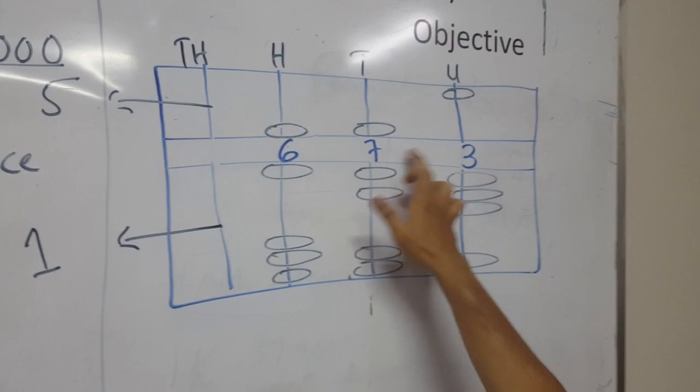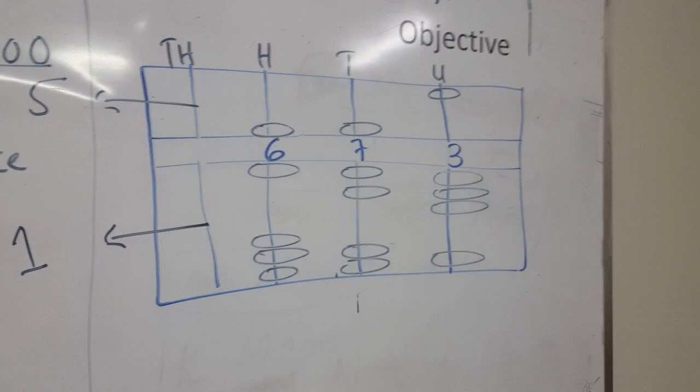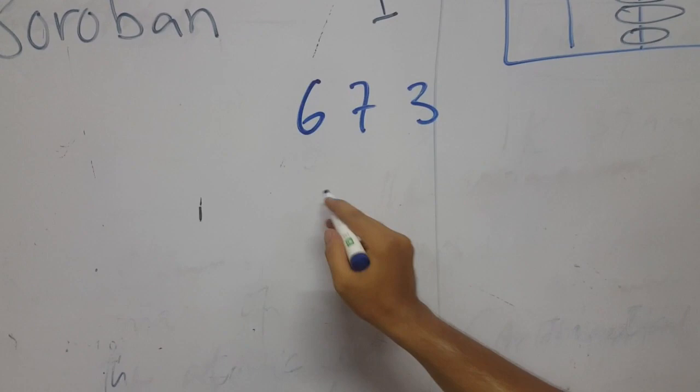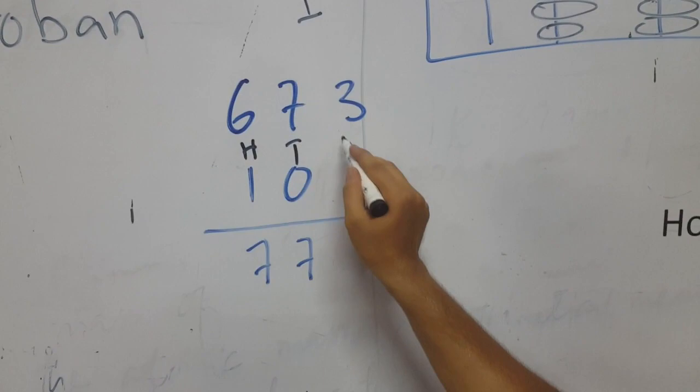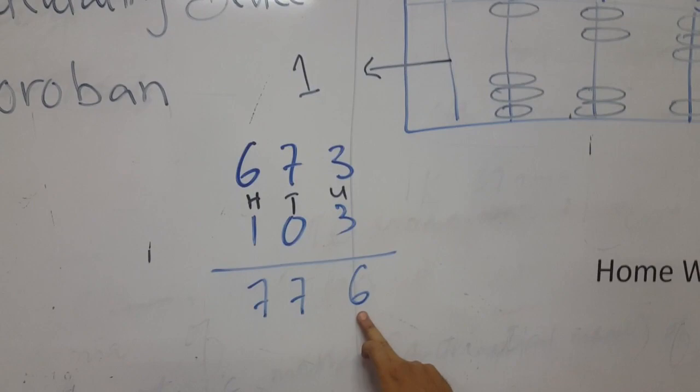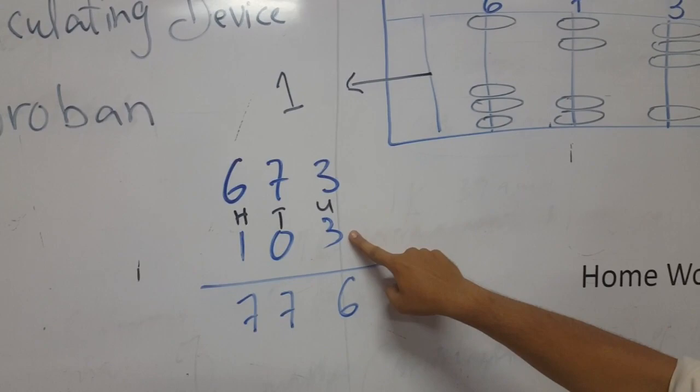Now we have example. We have this machine through which, for instance, I have 673 plus 103. So definitely the answer should be what? Answer should be 776.